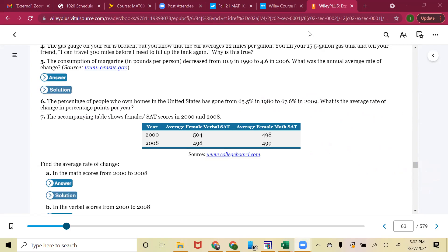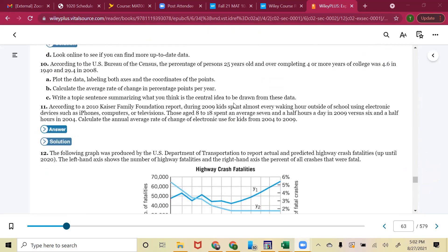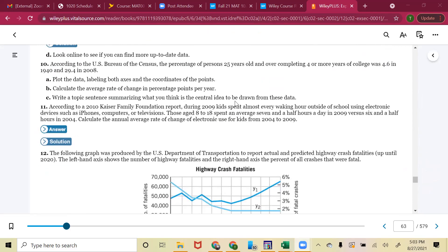Let's look at number 10. So number 10. According to the U.S. Bureau of the Census, the percentage of persons 25 years old and over completing four or more years of college was 4.6 in 1940 and 29.4 in 2008. Part A, plot the data, labeling both axes and the coordinates of the points. Part B, calculate the average rate of change of percentage points per year. And part C, write a topic sentence summarizing what you think the central idea is. I don't have enough space to be able to do this. So I'm going to stop share, and then I'm going to re-share a whiteboard.